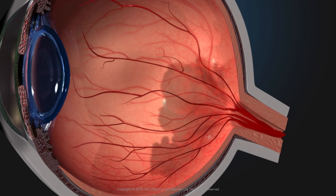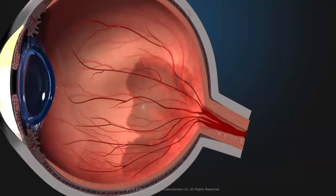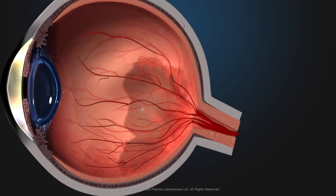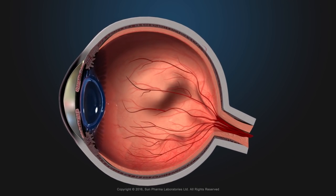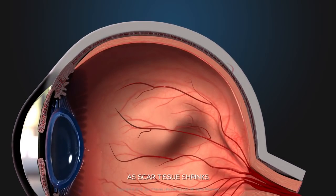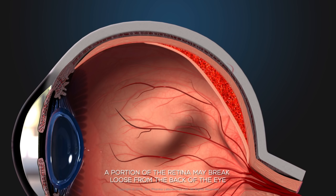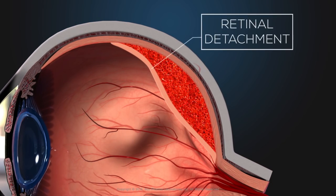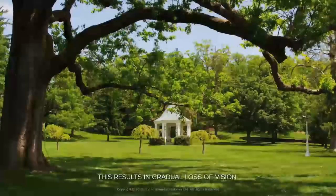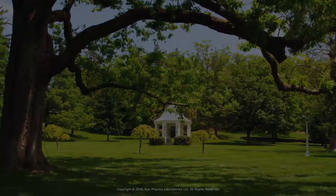As the retina gets damaged, scar tissue is formed and pressure builds up in the rear chamber. This could result in damage to the optic nerve. At the same time, as scar tissue shrinks, it pulls at the retina and a portion of the retina may break loose from the back of the eye. This is called retinal detachment, which results in a gradual loss of vision and ultimately blindness.